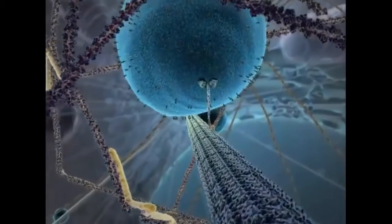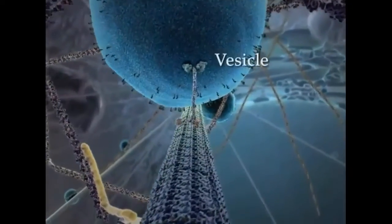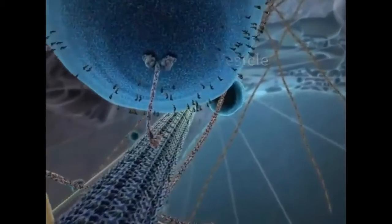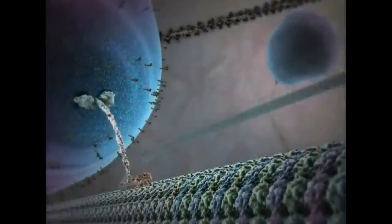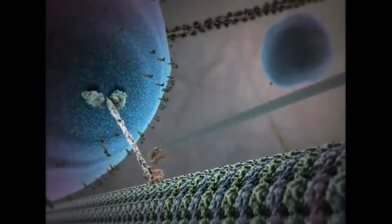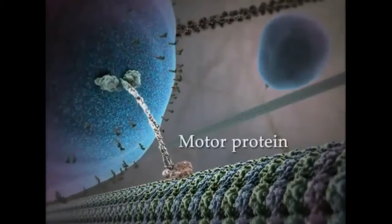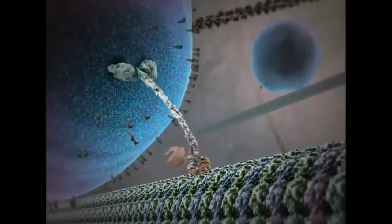Microtubules provide tracks along which membrane-bound vesicles travel to and from the plasma membrane. The directional movement of these cargo vesicles is due to a family of motor proteins linking vesicles and microtubules.